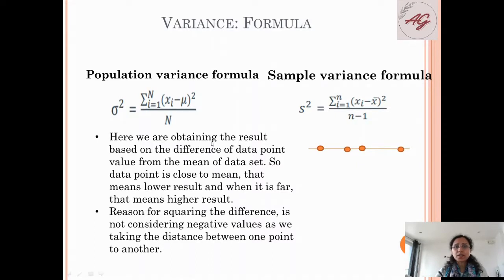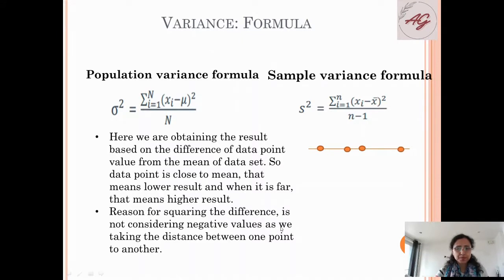We are obtaining the result based on the difference of the data point value from the mean of the data set. If a data point is close to the mean, that means a lower result because the distance will be less. But if it is far from the mean, then the result is higher because the distance will be higher. We are squaring the data because distance between one point and another cannot be negative — that's why we consider the square of this difference.